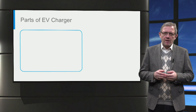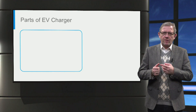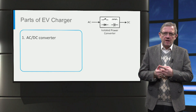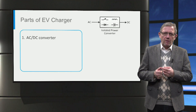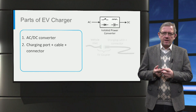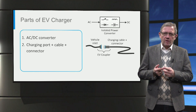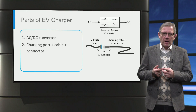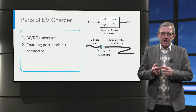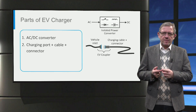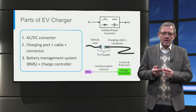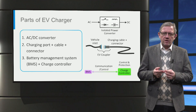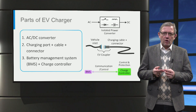An electric vehicle charging system has three main parts. The first part is the AC to DC power electronic converter, which converts the power from AC to DC. The second part is the charging cable with a connector, used to feed power from an external power supply to the electric car via the vehicle inlet. Finally, a charge controller on the external power supply side and the battery management system are responsible for communication, protection, and control of the charging process.